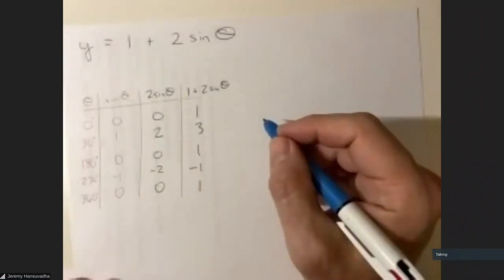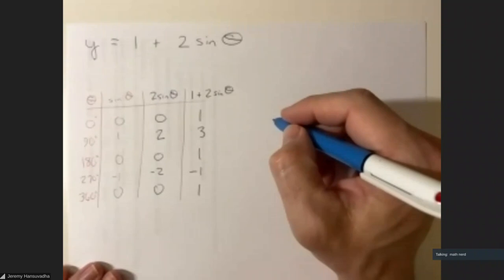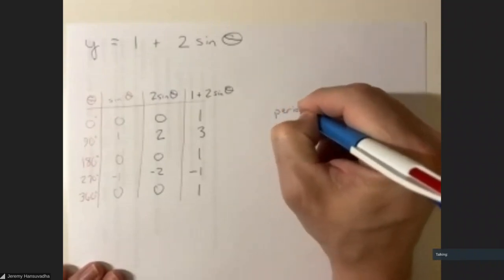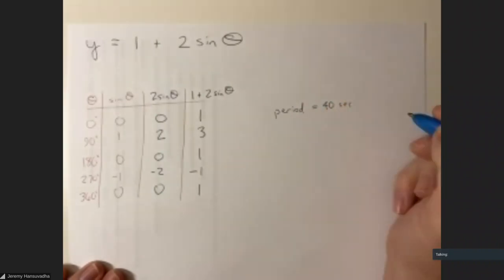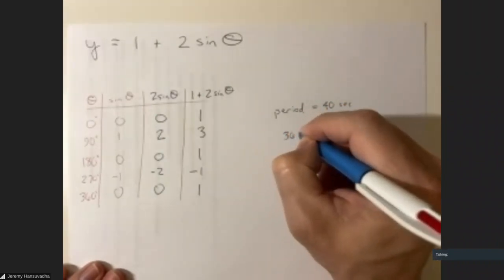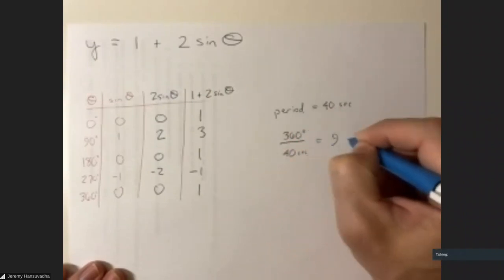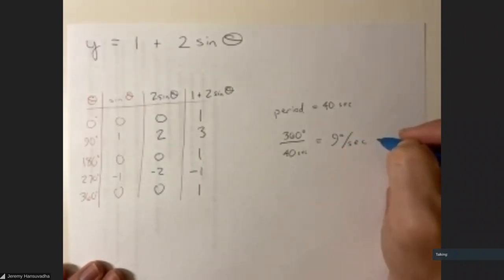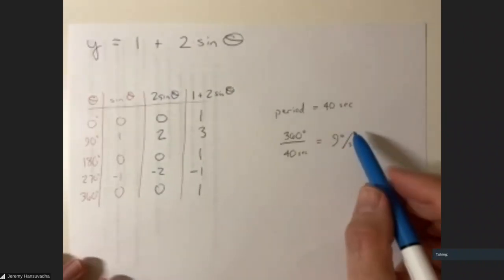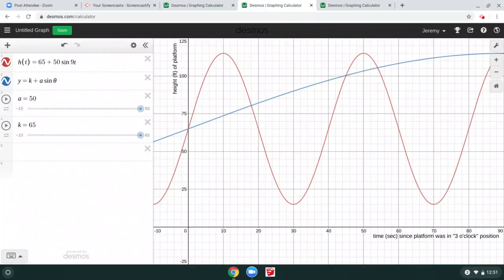The 9 in the equation is the angular velocity. It comes from: if the period is 40 seconds, then 360 degrees divided by 40 seconds equals 9 degrees per second. So if we have 9 as a coefficient inside the sine function, that means our period is going to be 40 seconds.